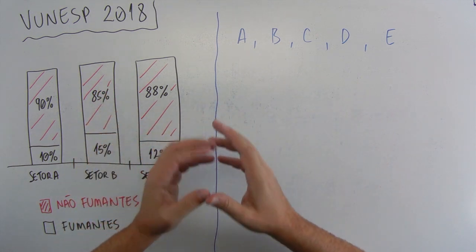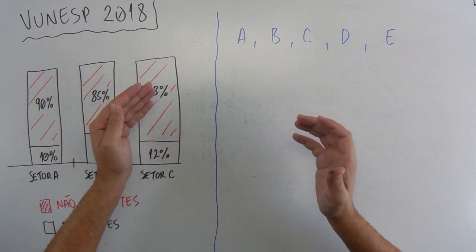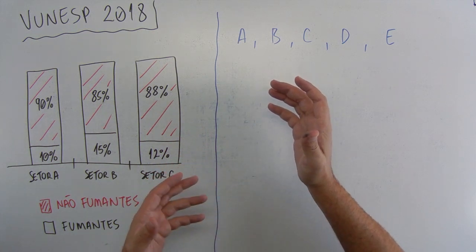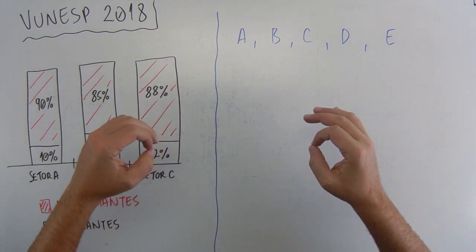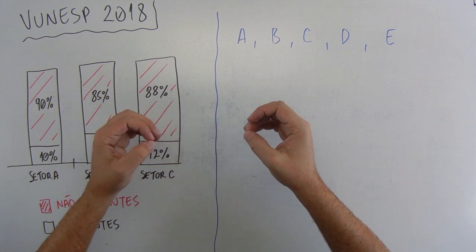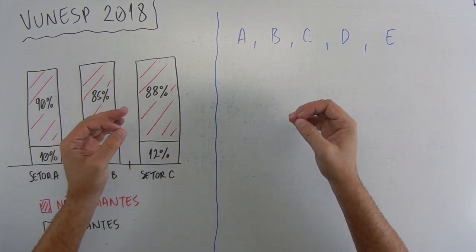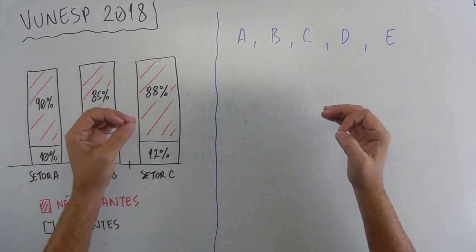Quando fala necessariamente verdadeira, não pode ter possibilidade. Se houver possibilidade, ela já não é alternativa. Então, a alternativa que a gente está em busca é de uma certeza absoluta. Por isso que está escrito necessariamente verdadeira. Vamos ver.